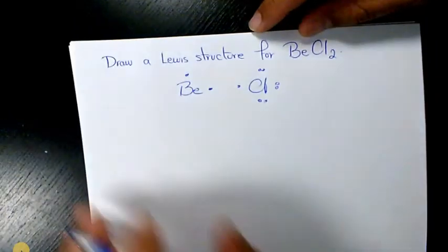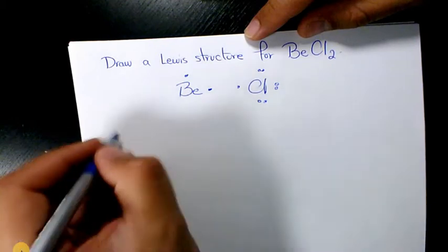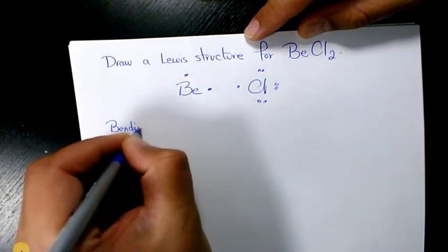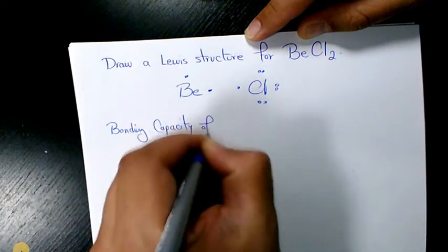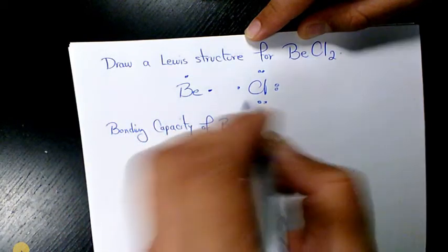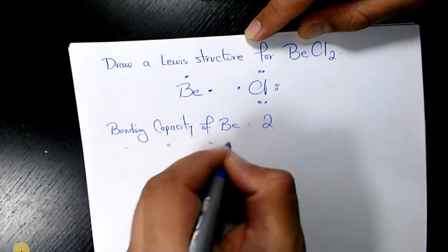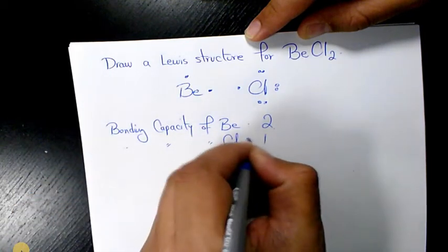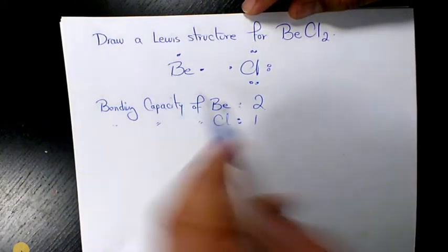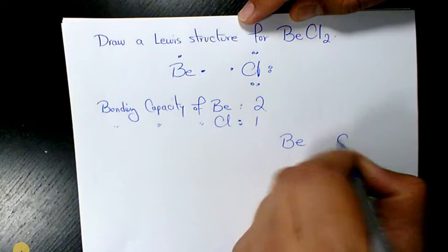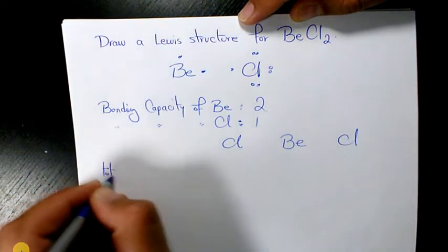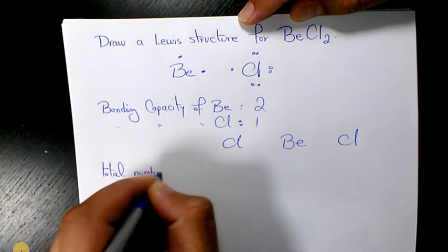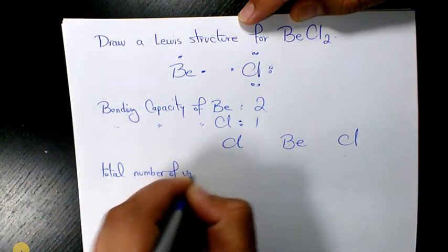Since the bonding capacity of beryllium is two and the bonding capacity of chlorine is one, it means that beryllium is the central element. I'm going to write it like that, and then I need to find out the total number of valence electrons.